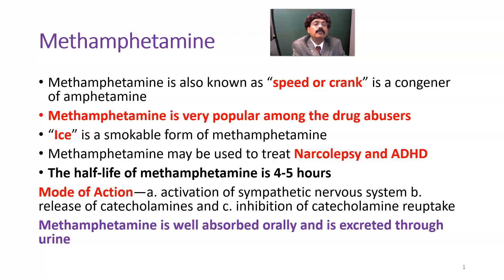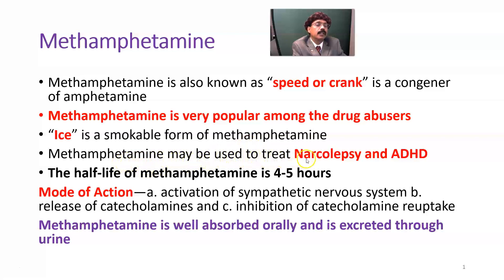Methamphetamine is also known as speed or crank. It is a congener of amphetamine, and amphetamine is a CNS stimulant. Methamphetamine is very popular among drug abusers. Ice is the name for the smokable form of methamphetamine. It may be used to treat narcolepsy and ADHD, but its prescription is very restricted because of its addictive properties, so prescription is not commonly practiced.